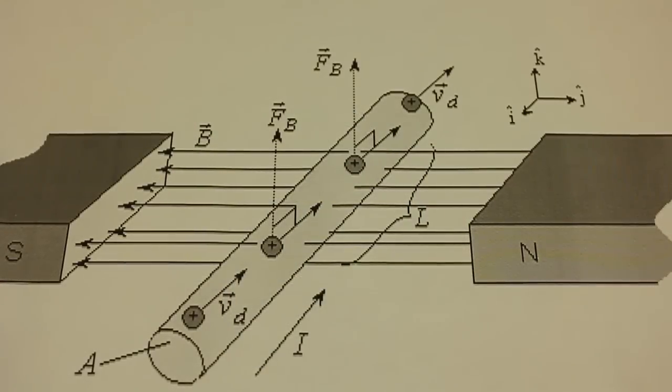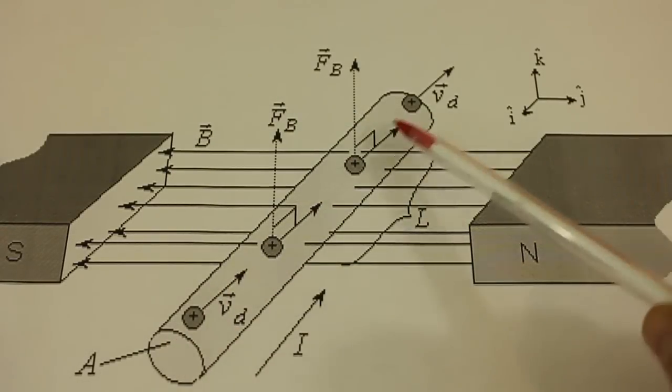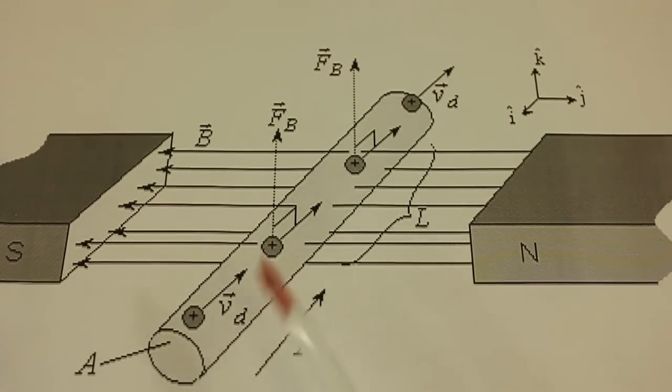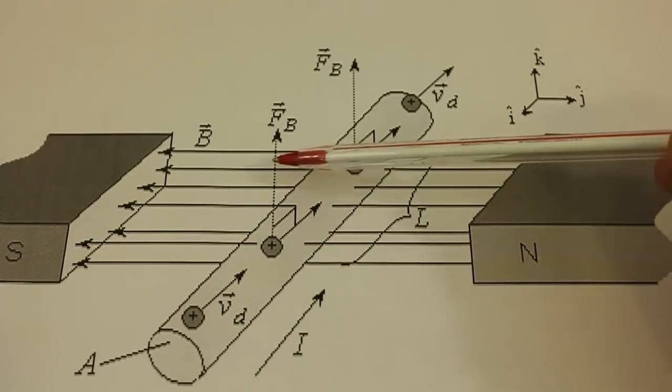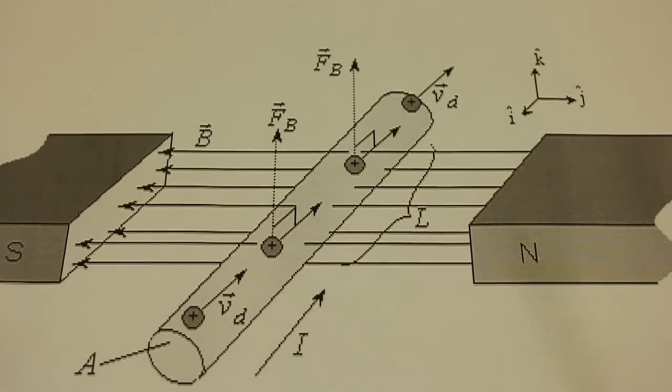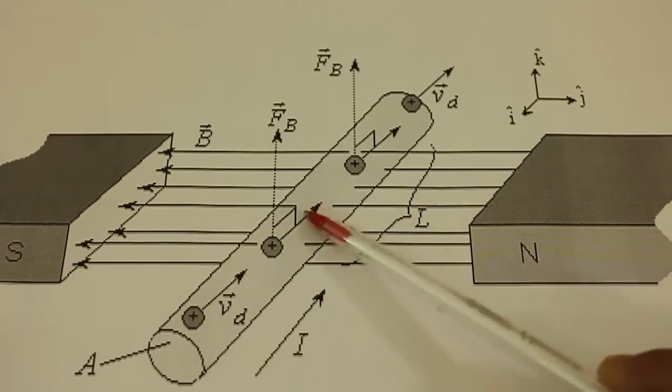If we have an electric current flowing in a conductor and that conductor is immersed in a magnetic field, then the conductor will feel a force, which is the Lorentz force, in a direction that is perpendicular to both the current and the magnetic field.